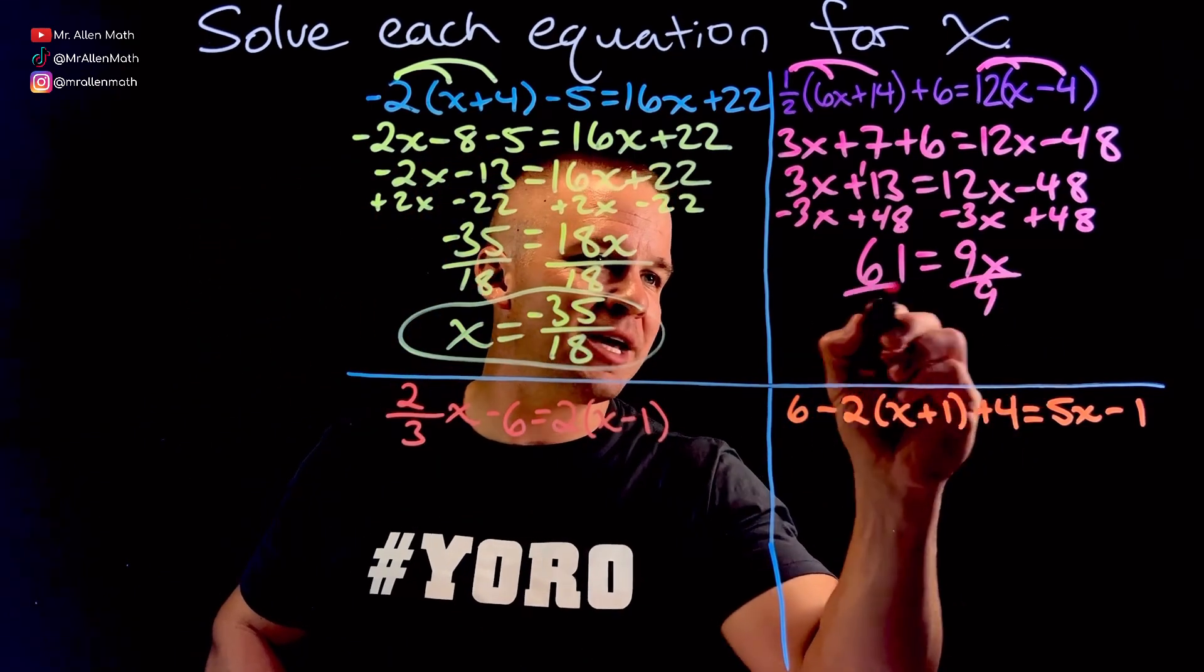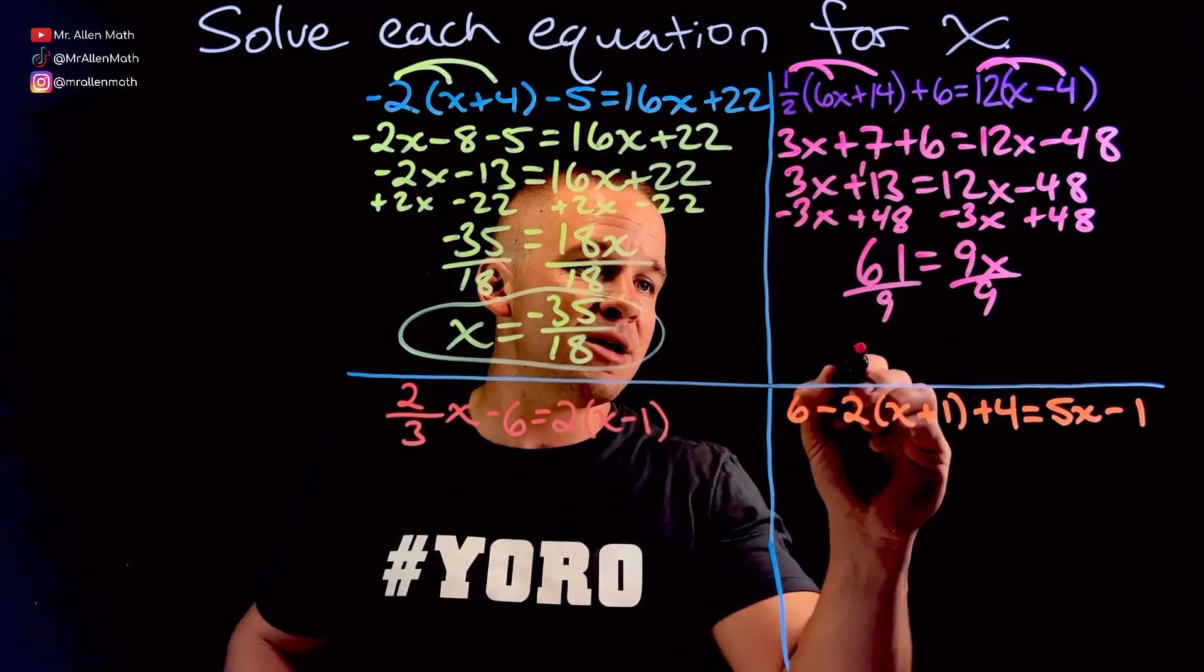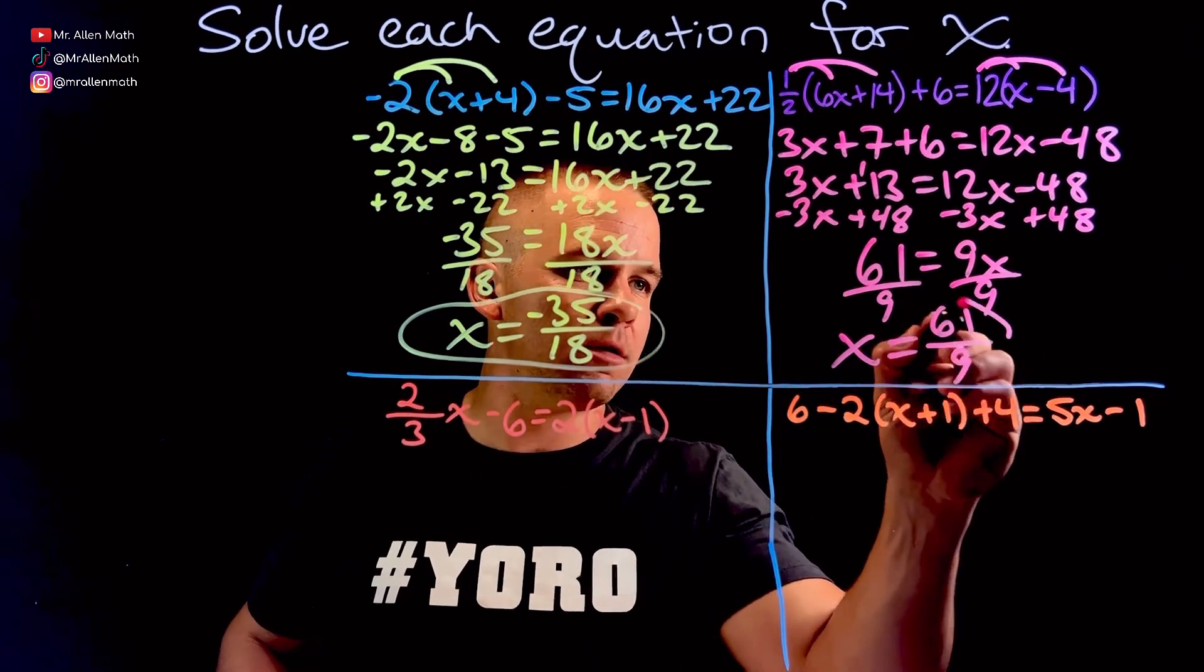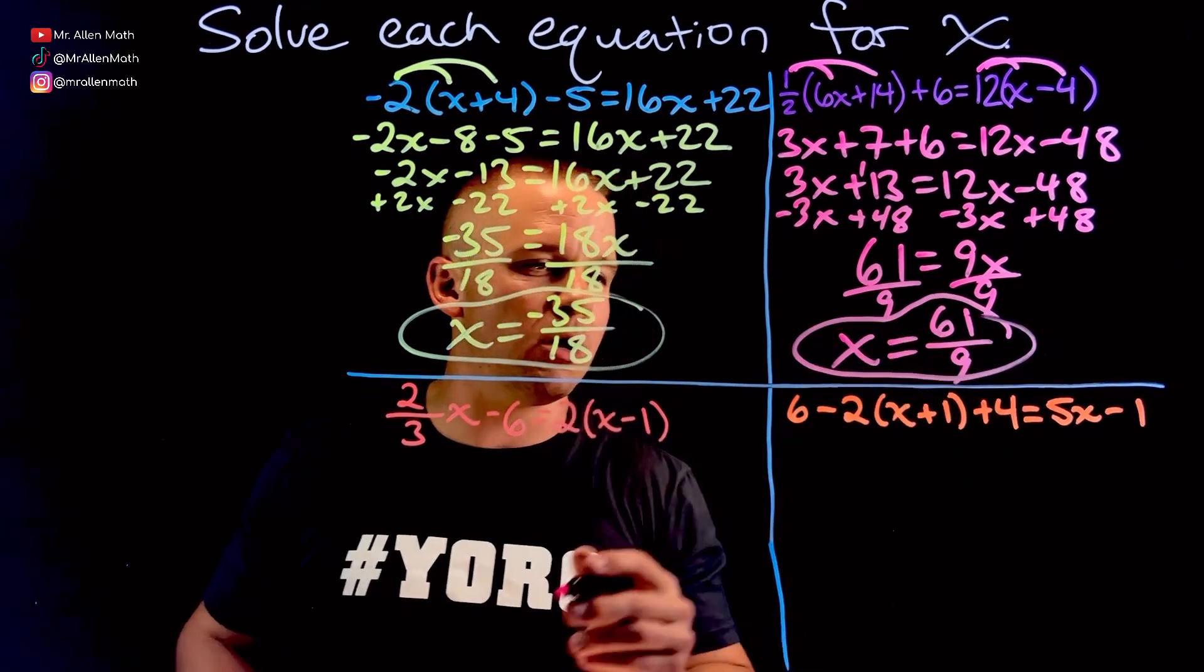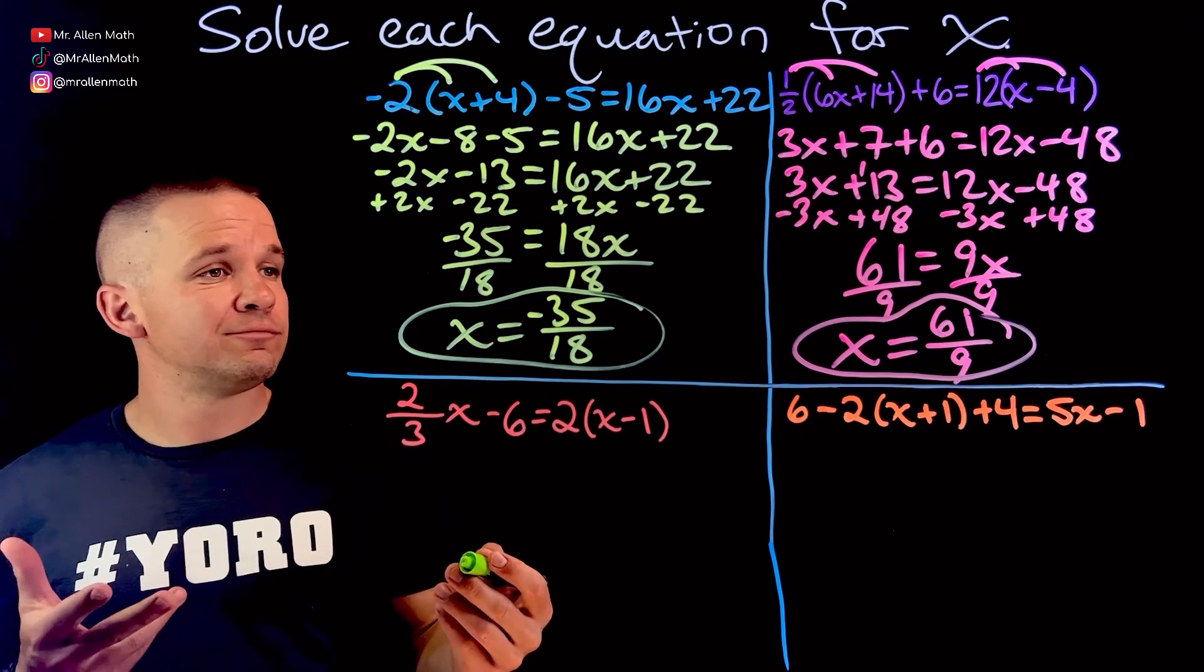Divide by 9. Once again, we're not going to have anything that we can divide that or simplify that by. So it's just going to be an awesome, terrible looking fraction, 61 over 9. Looks like a car. Anywho, moving on.